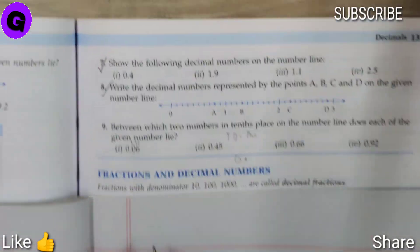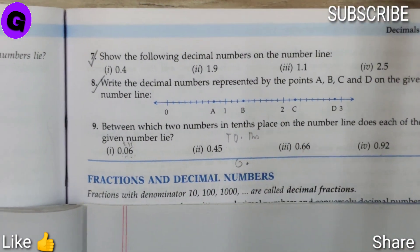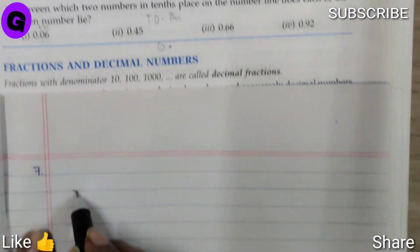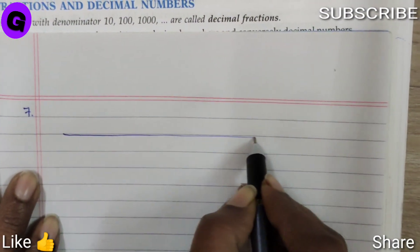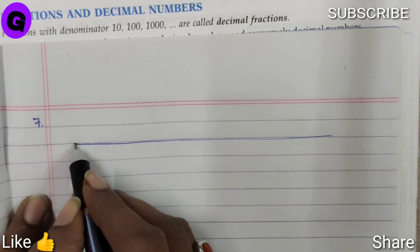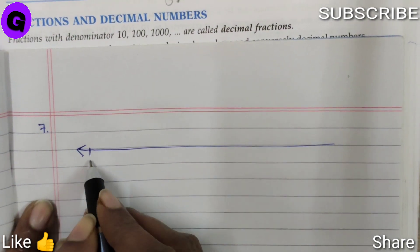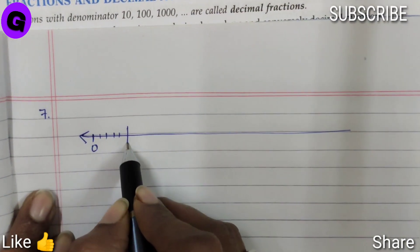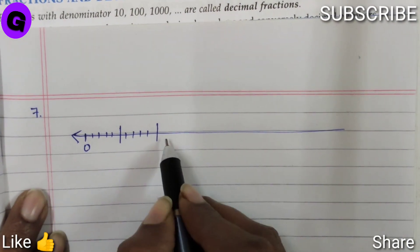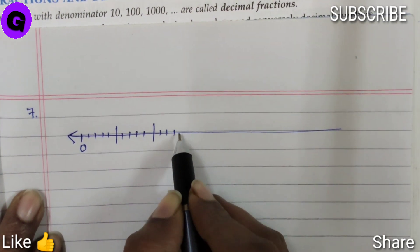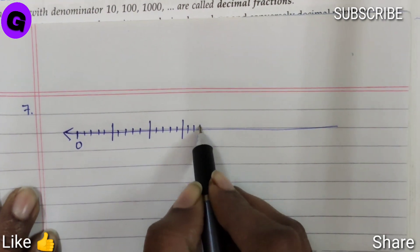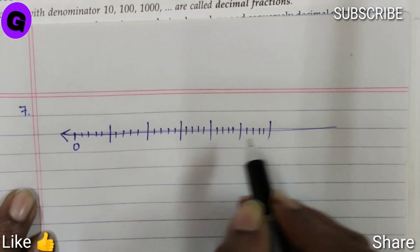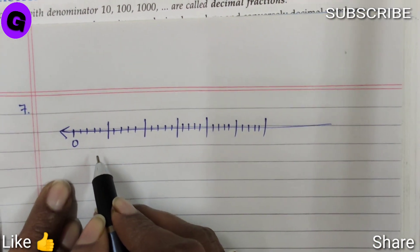Question number 7, show the following decimal number on the number line. So for that we first have to draw a number line. This is 0, 1, 2, 3, 4, 5, 6, 7, 8, 9, 10.